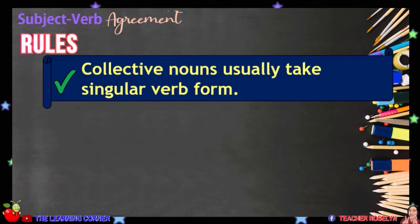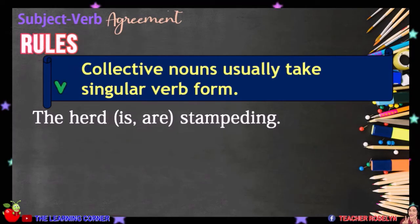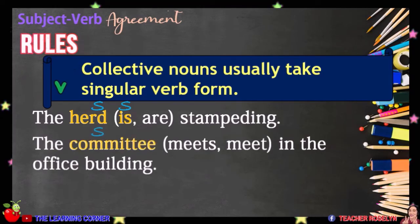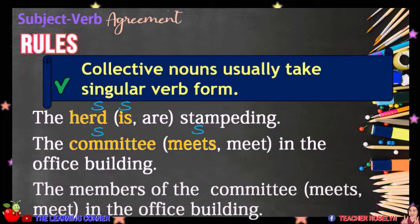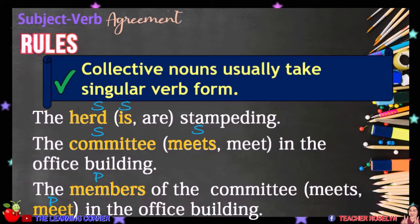Collective nouns usually take singular verb form. Collective nouns are words that refer to groups of persons, animals, or things, and they commonly refer to a single unit. For example, the herd is stampeding. The committee meets in the office building. But if the sentence refers to the members, which is plural, we will use the word MEET. The members of the committee meet in the office building.